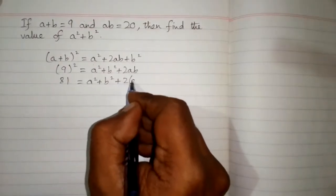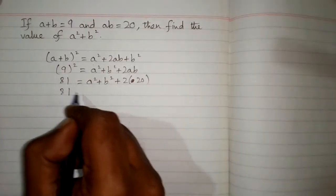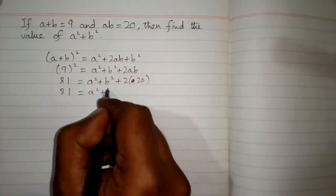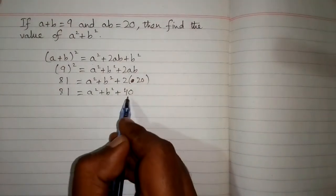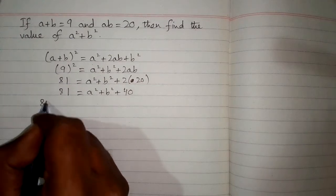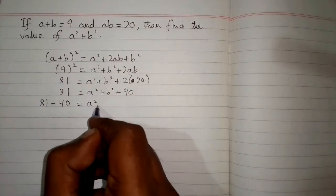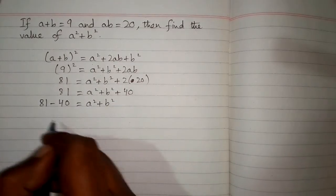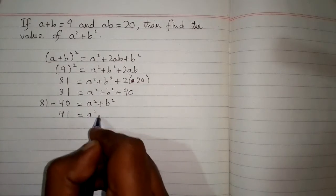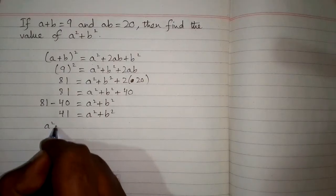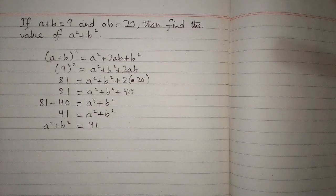Now 2 times 20 is 40, and then we take this 40 on this side of equation so we have 81 minus 40 is equal to a² + b². And 81 minus 40 is 41, so the value of a² + b² is 41 and this is the required answer.